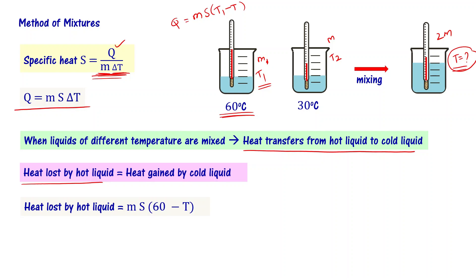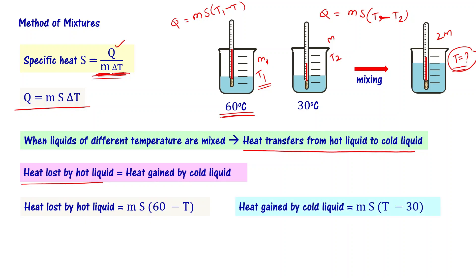Now let us write heat gained by the cold liquid. Q is going to be M times S times (T minus T2), where T is the final temperature and T2 is the initial temperature of the cold liquid. So heat gained by the cold liquid is M times S times (T minus 30).